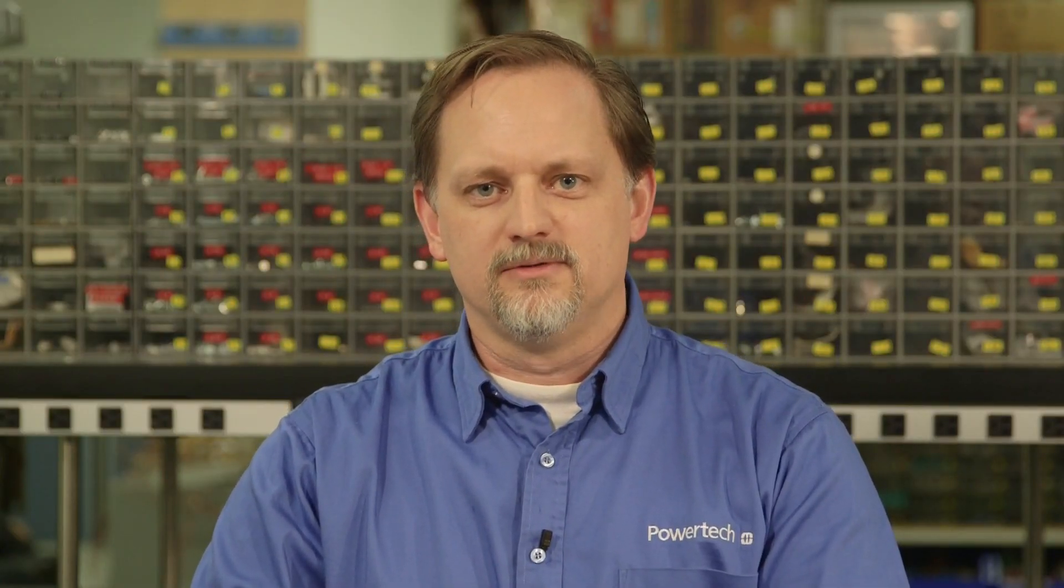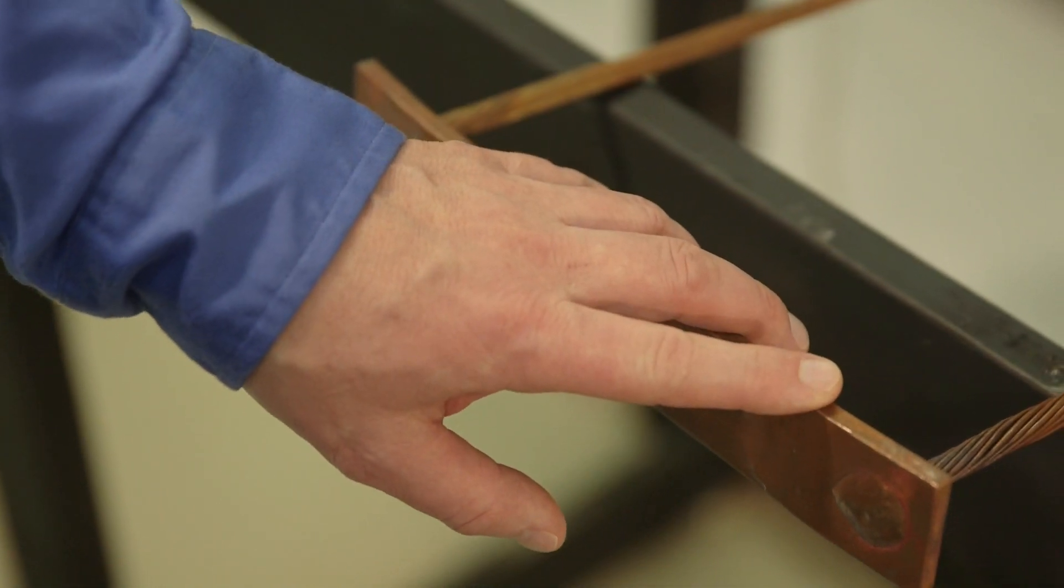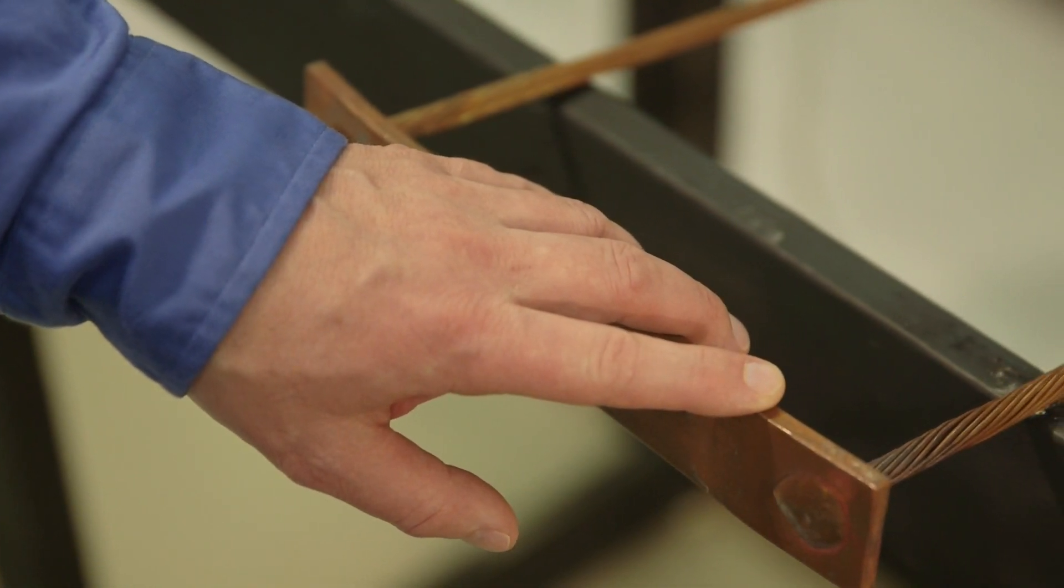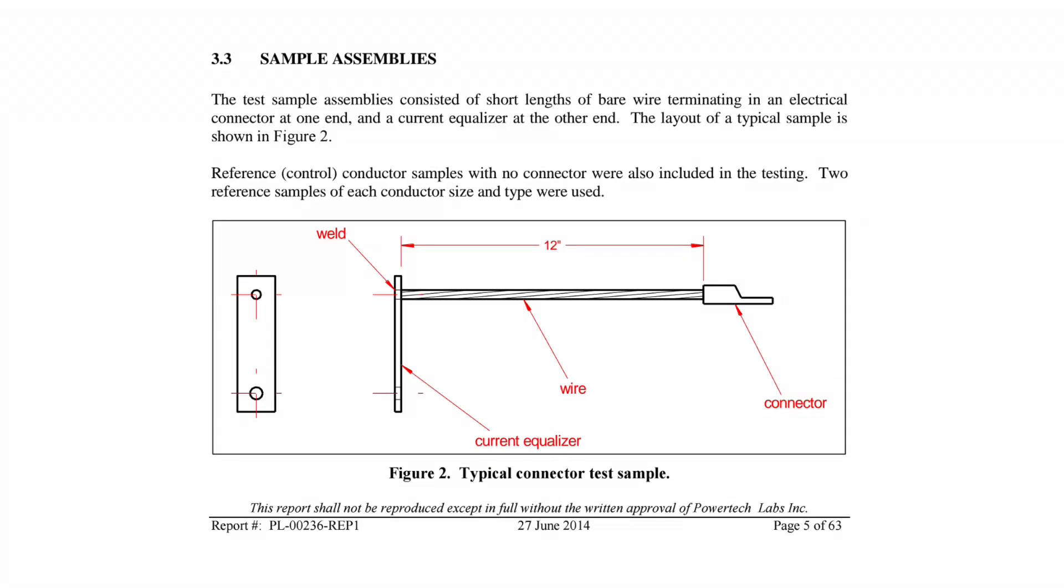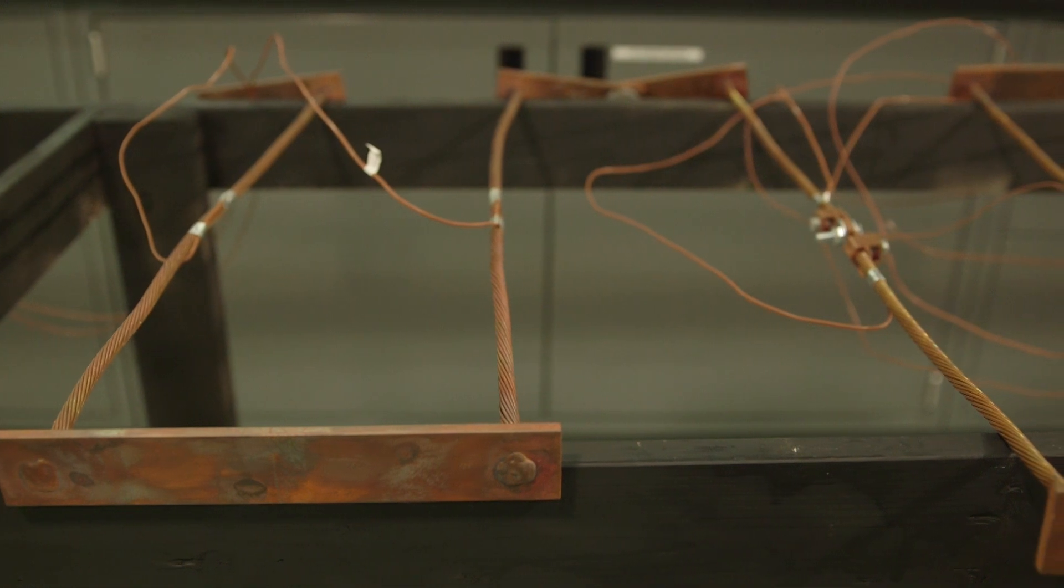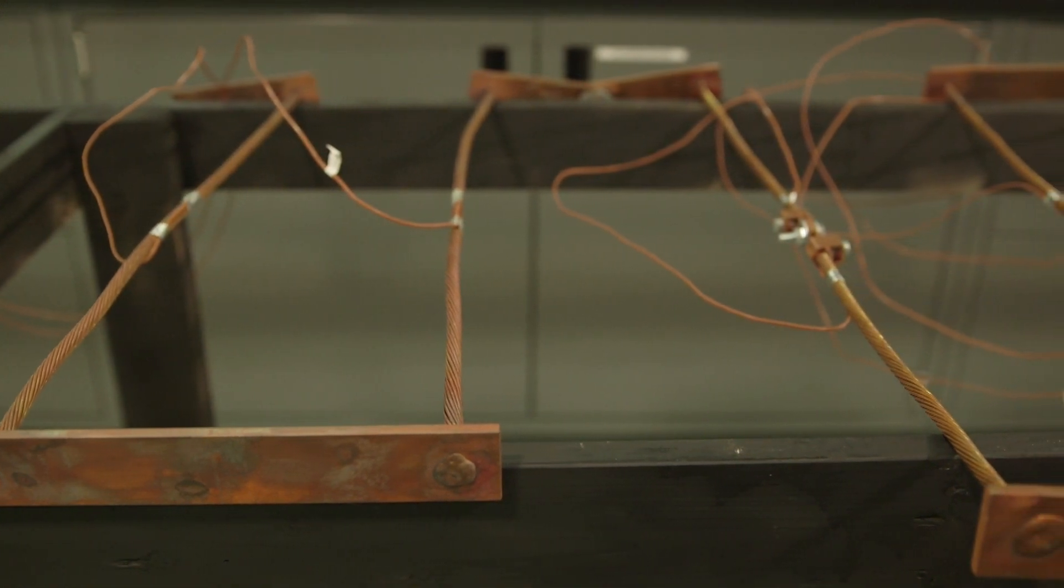Current equalizers were installed on the end of each test sample. A current equalizer consists of a conductive bar that is welded to all strands at the end of the conductor. This is a standard technique and ensures the best possible connection to the end of the conductor. Control samples were also prepared which consisted of lengths of conductor with equalizers but no connector.